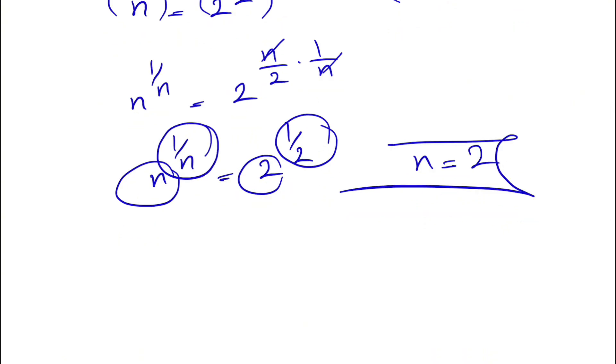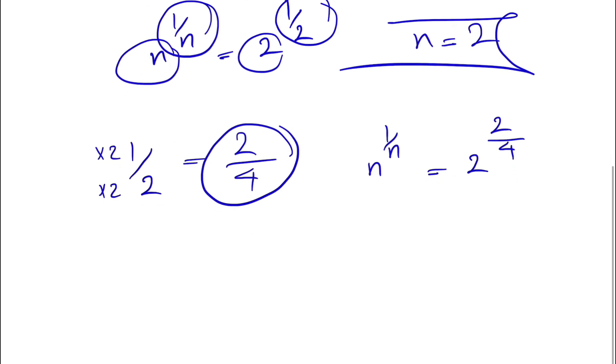And the other answer is that we know 1/2 is equal to 2/4. Basically, if we multiply the denominator and numerator here, we'll get 2/4, which means our n to the power of 1/n can be written as 2 to the power of 2/4. And we're going to do the same thing here. We're going to bring the 2 inside of the parentheses and we'll keep the 1/4 outside of the parentheses based on the law of exponents that we talked about earlier.